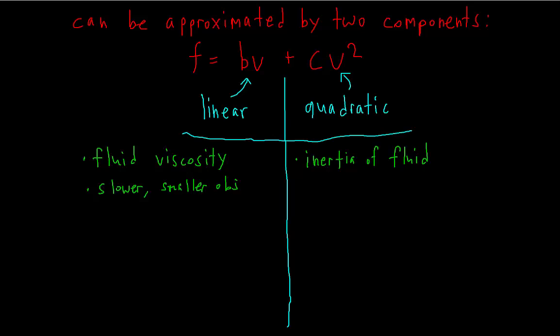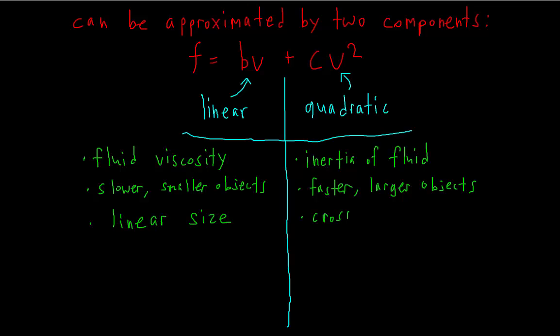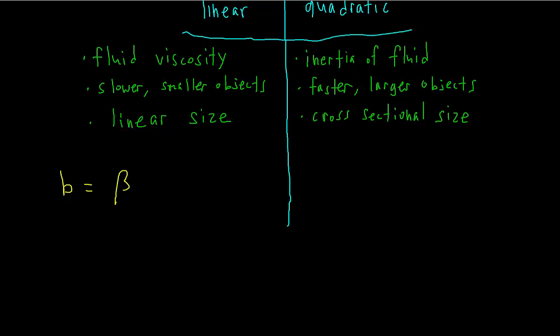The linear component of drag is more prominent for slower and smaller objects, whereas the quadratic component is more important for faster and larger objects. The linear component depends on the linear size — basically just the length — and the quadratic component depends on the cross-sectional size. For a sphere, the constant B of linear air resistance is approximated as a constant times the diameter, and C of quadratic air resistance is approximated as a constant times the diameter squared, because diameter represents linear size and diameter squared represents cross-sectional size.